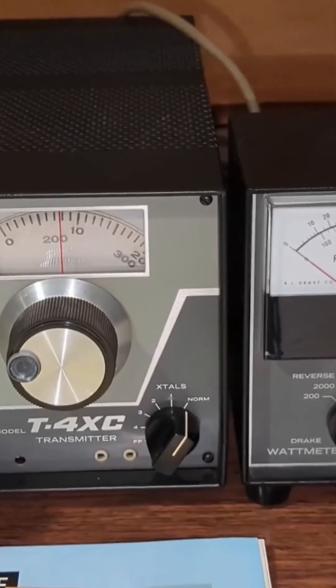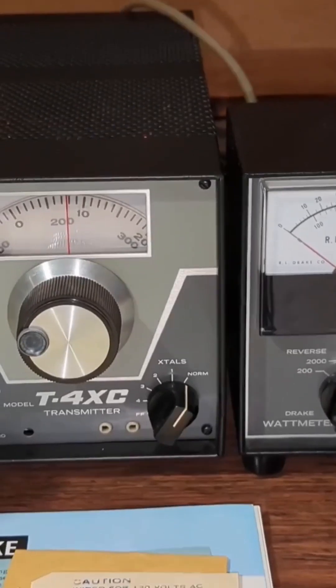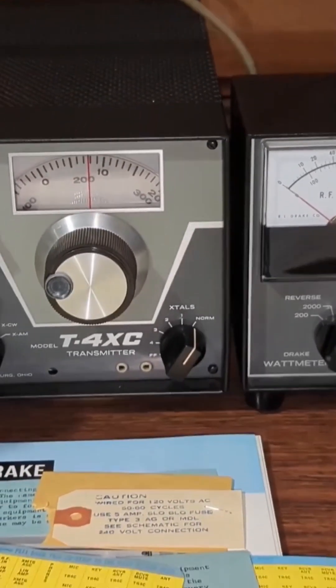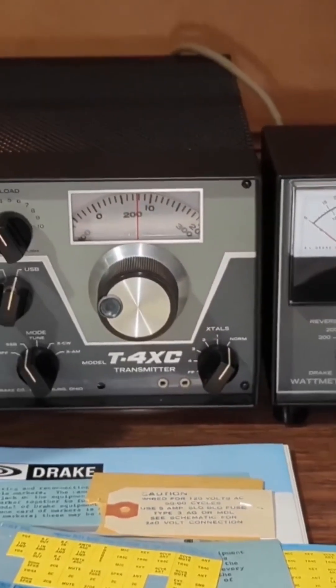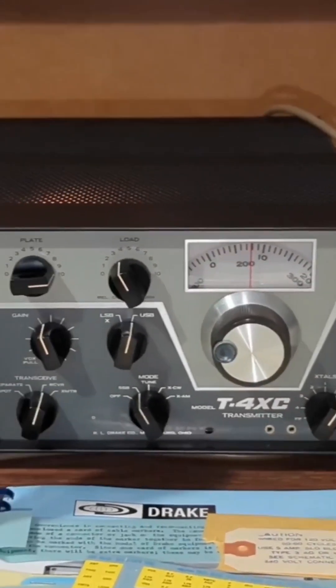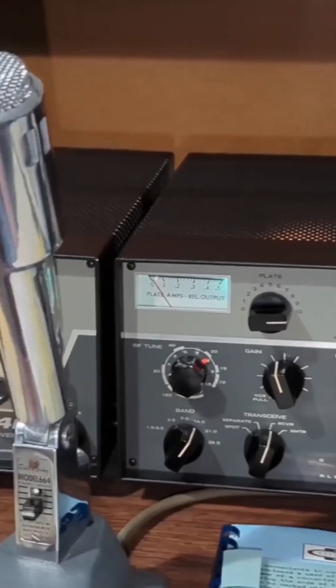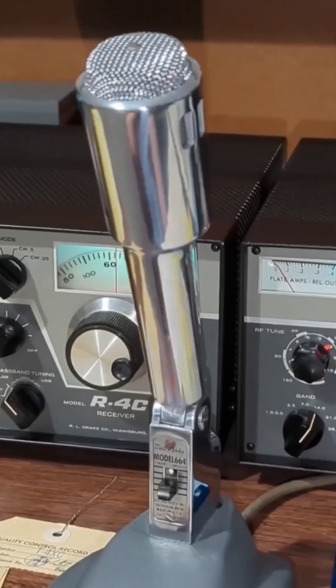Covers 80 through to 10 meters, expandable almost anywhere on HF. Power output, a rock-solid 150 watts PEP from dual 6JB6 beam tetrodes. Loafing in comfort.